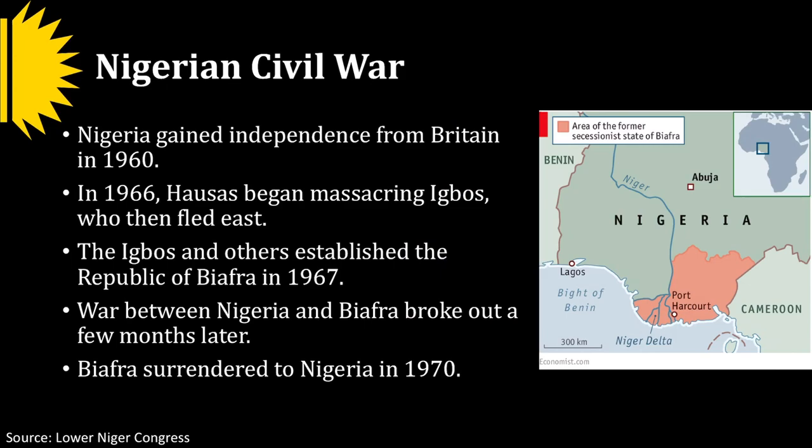However, this changed in 1960, and in 1966 another tribe called the Hausa began massacring Igbos and killing them, who then fled eastwards in Nigeria. The Igbos and others established a new republic called Biafra in 1967. There was then a secession war between Nigeria and Biafra which broke out a few months later, and Biafra ultimately lost this war and surrendered to Nigeria in 1970.